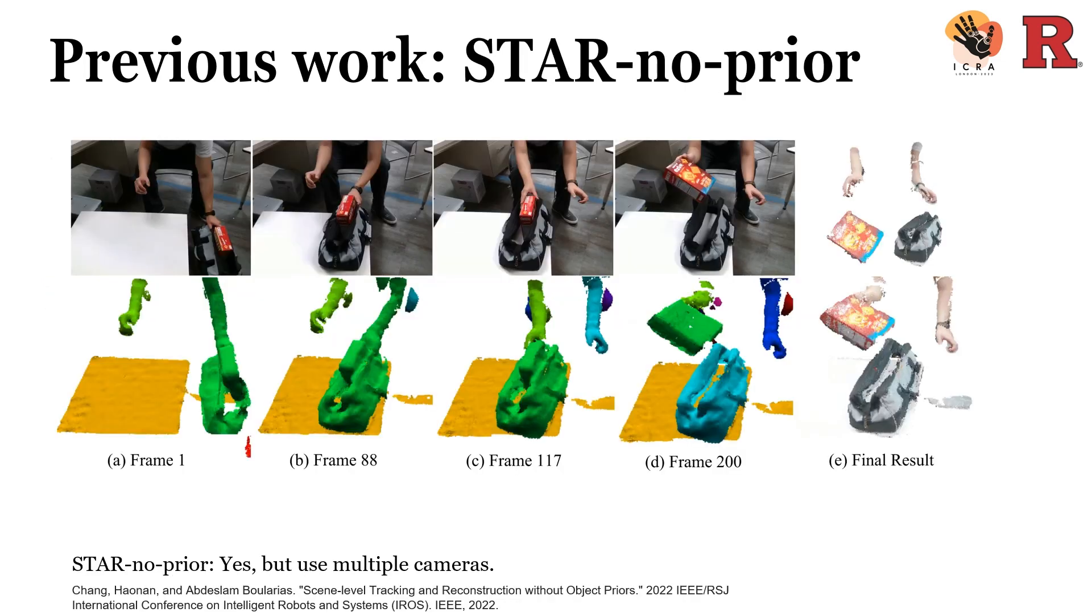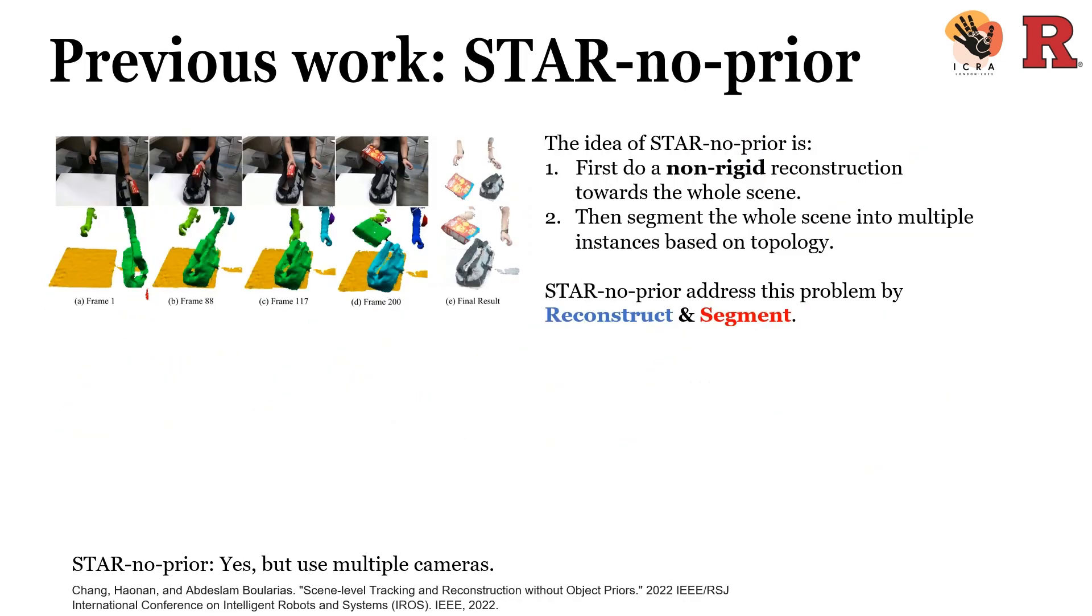More recently, Huang et al. proposed STAR-no-prior. Different from previous work only being able to address rigid objects, by first applying a non-rigid transformation and then performing segmentation based on topology, STAR-no-prior can model non-rigid objects in the scene.